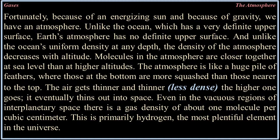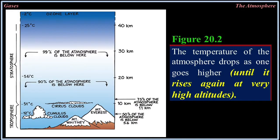Even in the vacuous regions of interplanetary space there is a gas density of about one molecule per cubic centimeter, primarily hydrogen — the most plentiful element in the universe. Figure 20.2 shows how thin our atmosphere is: 50% of the atmosphere is below 5.6 kilometers, 75% is below 11 kilometers, 90% is below 17.7 kilometers, and 99% of the atmosphere is below an altitude of about 30 kilometers.